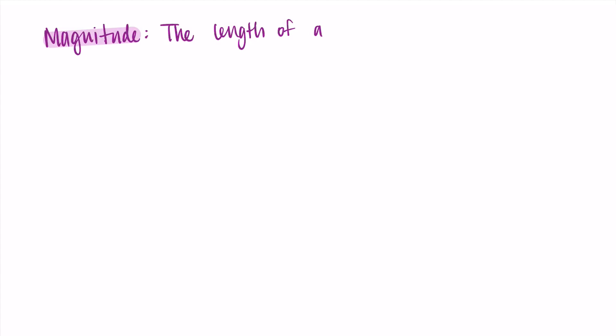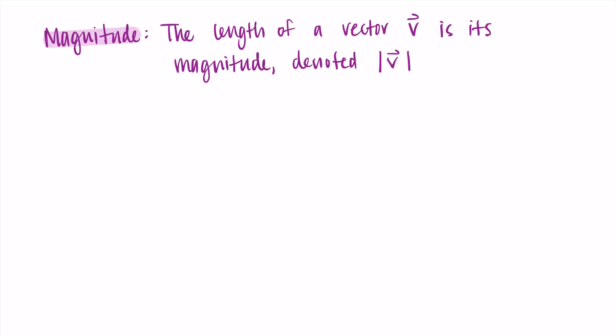Welcome. In this video we are going to talk about magnitude of vectors. The magnitude is one of the two things that defines a vector — we have magnitude and direction — so understanding how to find the magnitude of a vector is really important. The length of a vector v is its magnitude, denoted with either a single bar like absolute value, or a double bar called norm notation. I like the double bar because it distinguishes magnitude from absolute value, but you will see it written both ways and they're often interchangeable.